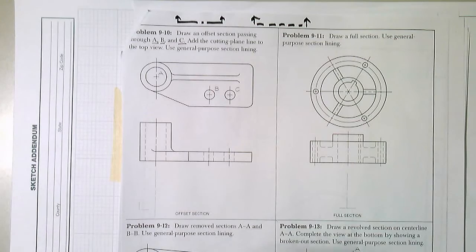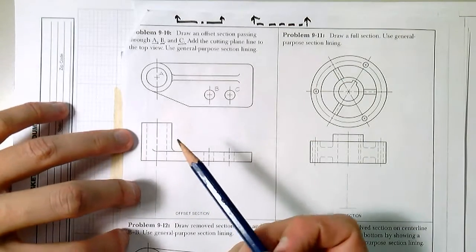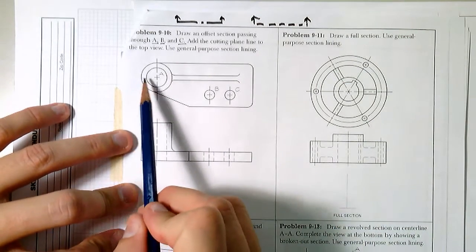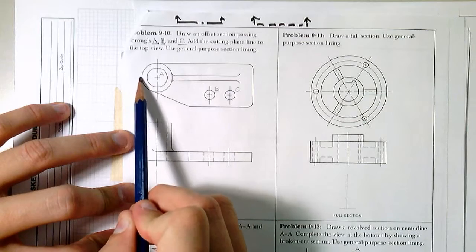So the first thing we're going to do is draw an offset section through A, B, and C. That means, and I'll lightly sketch this at first, you don't want to go with the dark pencil or the dark pen at first. You want to kind of think through where you're cutting.